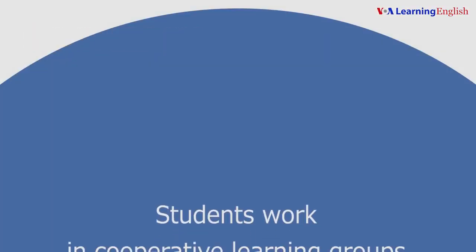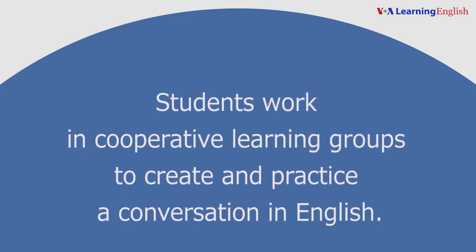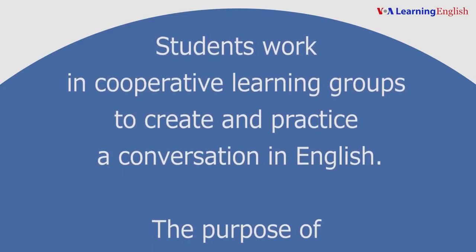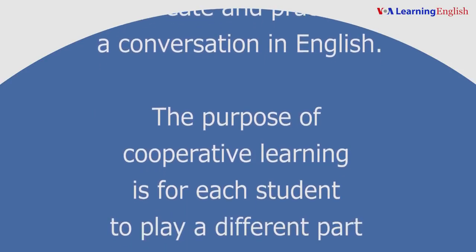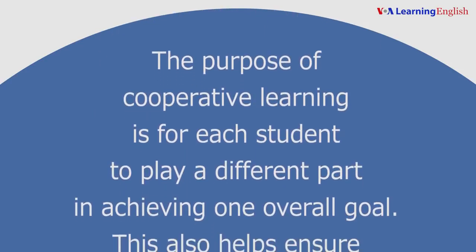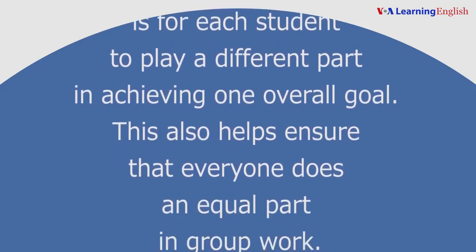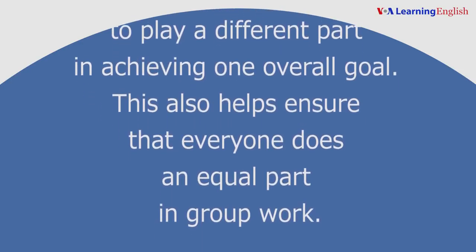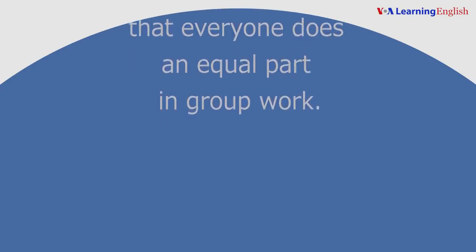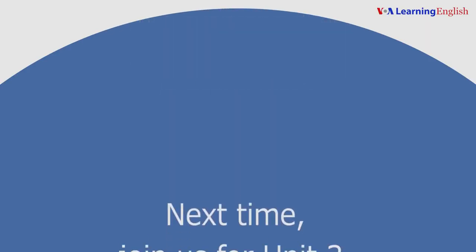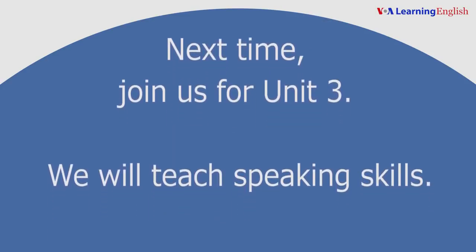Summary. Students work in cooperative learning groups to create and practice a conversation in English. The purpose of cooperative learning is for each student to play a different part in achieving one overall goal. This also helps ensure that everyone does an equal part in group work. Next time, join us for Unit 3. We will teach speaking skills.